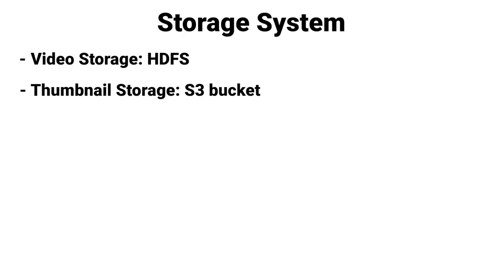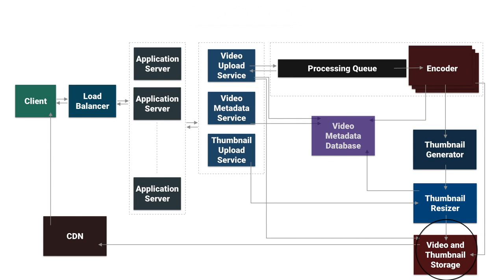Now let's discuss the storage system. We need to store videos and thumbnail images. For video, we can go with HDFS (Hadoop Distributed File System), which is a distributed file storage system. For thumbnails, we can go with S3 bucket. Finally, we put our content — video and thumbnail — on CDN (content delivery network) so that users can access content from their nearest data center with lower latency, giving them the best user experience.